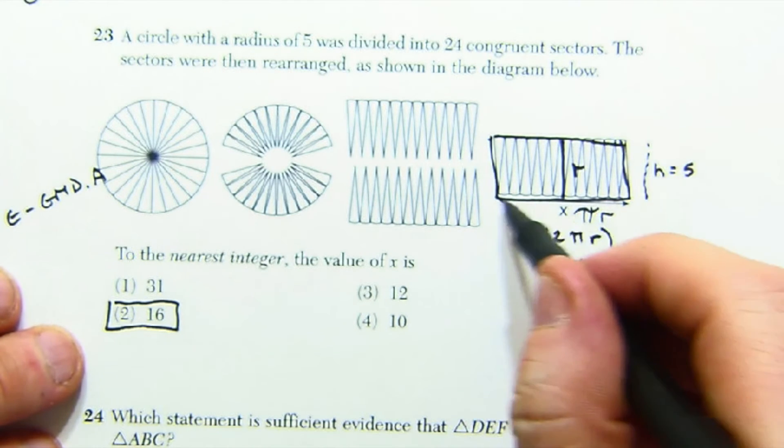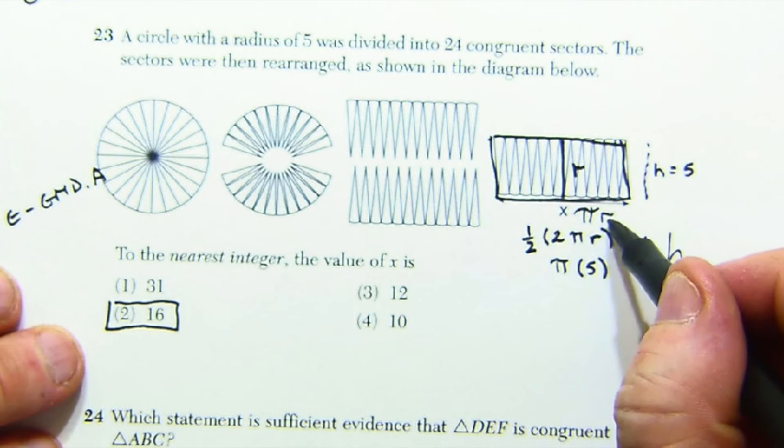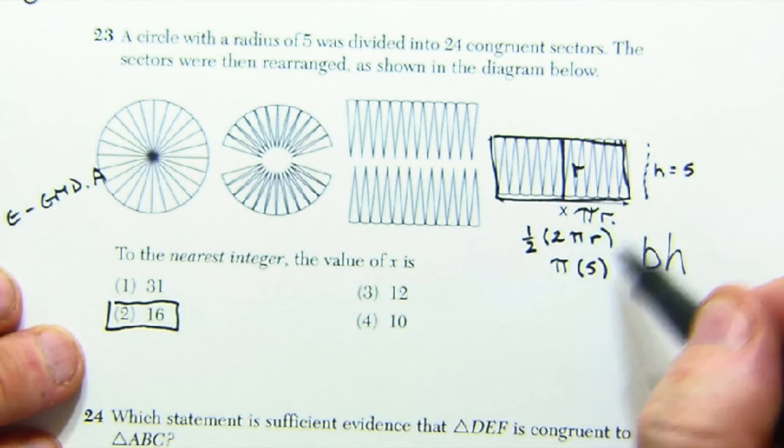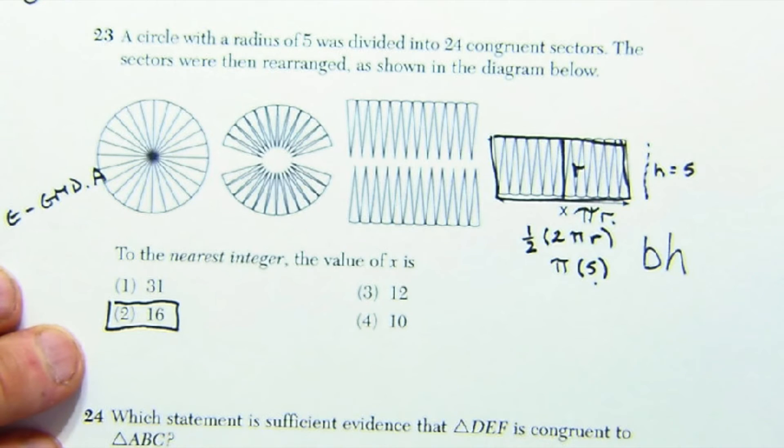But anyways, they wanted to know what x is, which is just half of a circumference, so it's pi r, where r is 5, and we get close to 16. Good question, straight to the point.